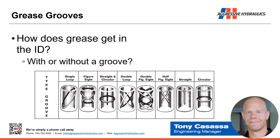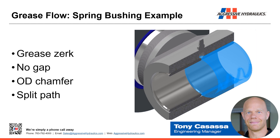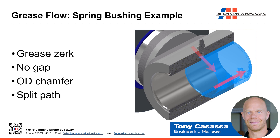Next audience participation question: how does grease get to the ID, if we have a groove? A lot of these grooves are circular — how is grease going to get to that circular groove? Here we have an example with a spring tension bushing. We see the grease circuit in the middle. One side is highlighted in blue, the other is not, but we have no gap between them — those bushings are butted right up together in the middle of the mount. But we have a chamfer on the OD, and with the split tension bushing between the teeth we have that split path. So that chamfer is going to allow grease to come around and then follow along this path to distribute itself along the length of the bushing.